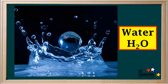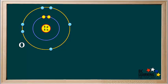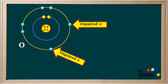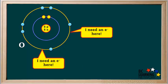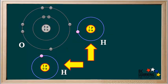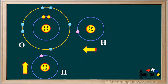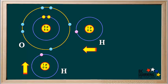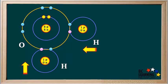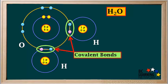Next we'll look at the formation of water, H2O. Here is the Bohr model for an oxygen atom. Its six valence electrons are shown here as light blue circles. We can see that an oxygen atom has two unpaired electrons in its valence shell. In order for this oxygen atom to end up with a stable octet, two more electrons would need to be added to its valence shell. Now we'll add two hydrogen atoms, each with one unpaired electron in its valence shell. The two hydrogen atoms now move toward the oxygen atom. This gives us the molecule of water, H2O. This molecule has two covalent bonds. In each covalent bond, a pair of electrons is being shared between hydrogen and oxygen.